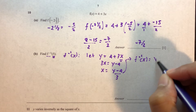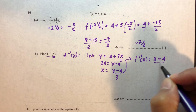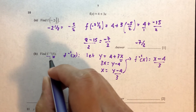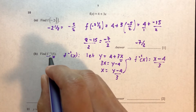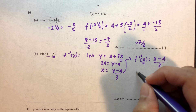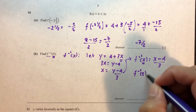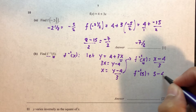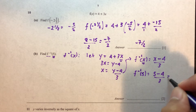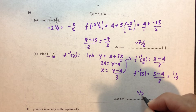So f inverse of x equals x minus 4 over 3. Now we have to find the value of f inverse of 5. Replace x by 5, which gives 5 minus 4 over 3, which is 1 over 3. And that will be the answer for part B.